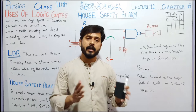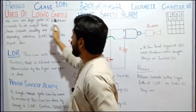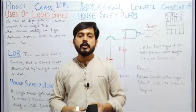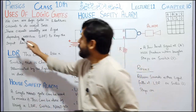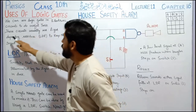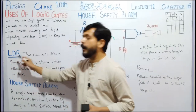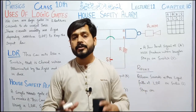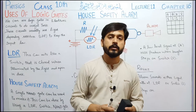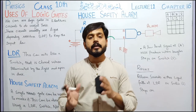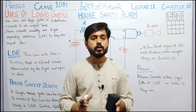We use logic gates somewhere or the other for safety purposes. Generally, we can use logic gates in electronic circuits to perform useful tasks. These circuits usually use Light Dependent Resistors, which are called LDR. If we talk about a resistor, it is basically a switch — a circuit element. And if we talk about resistance, it is the opposition to the flow of current through a conductor.